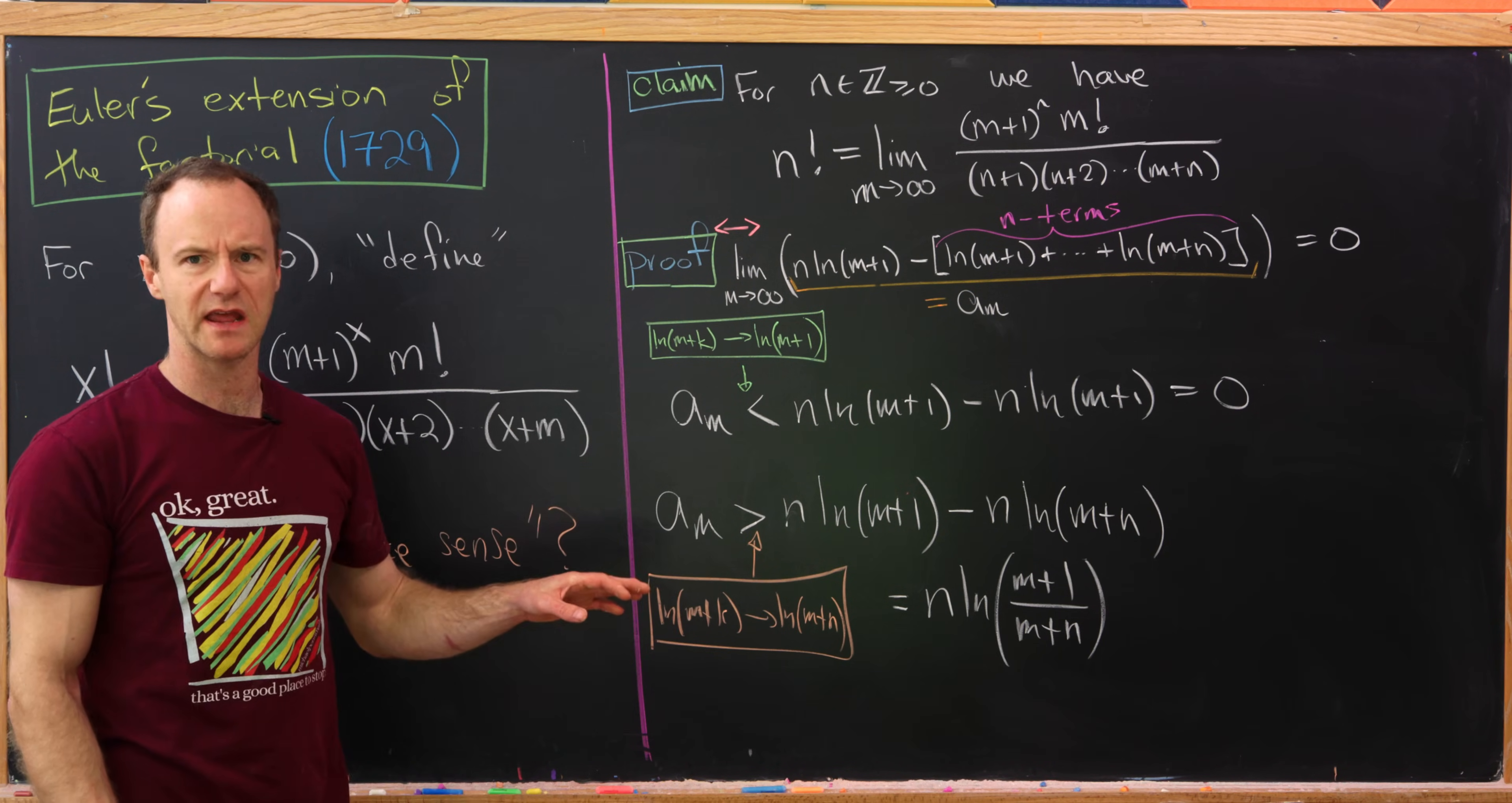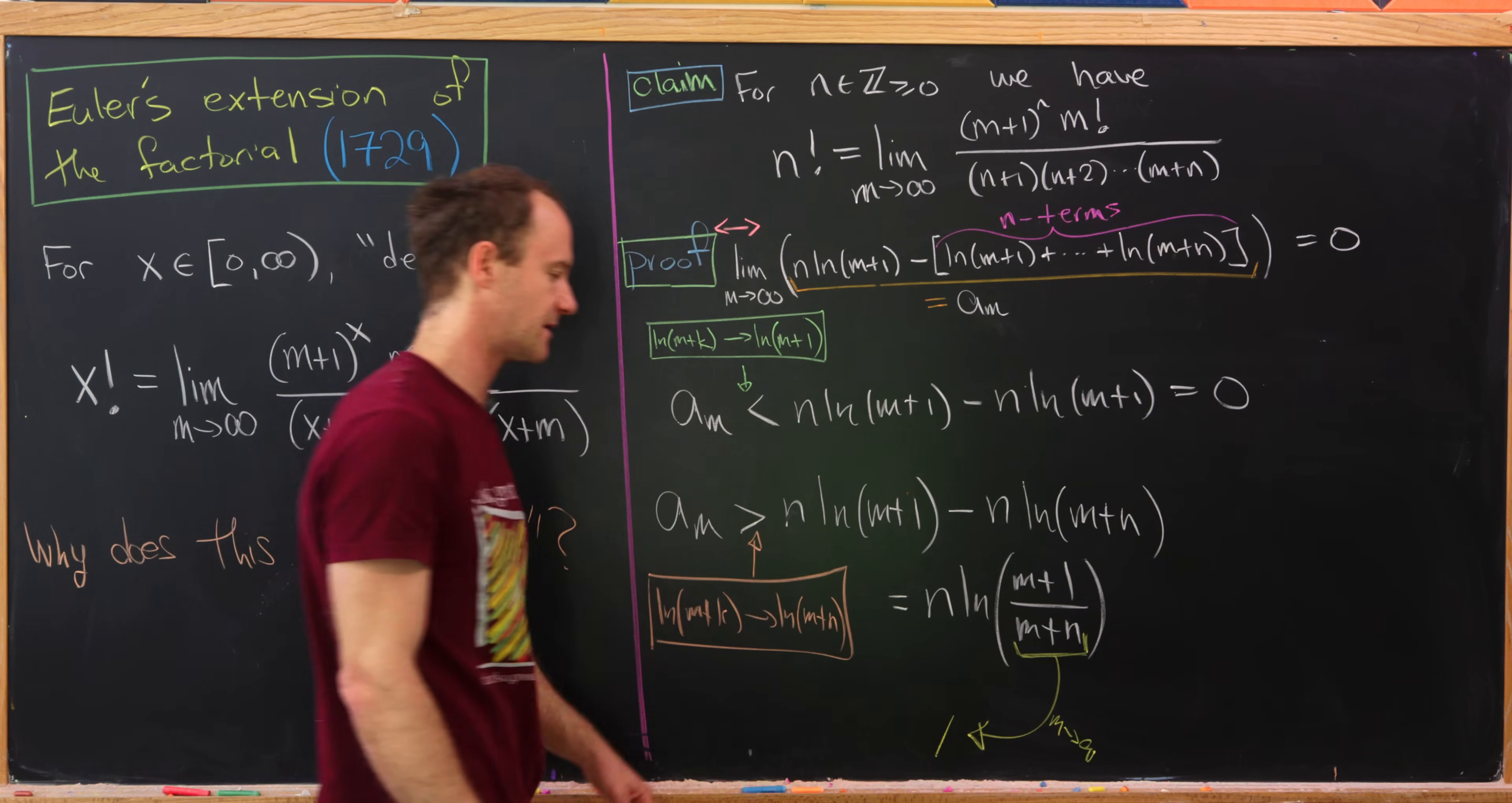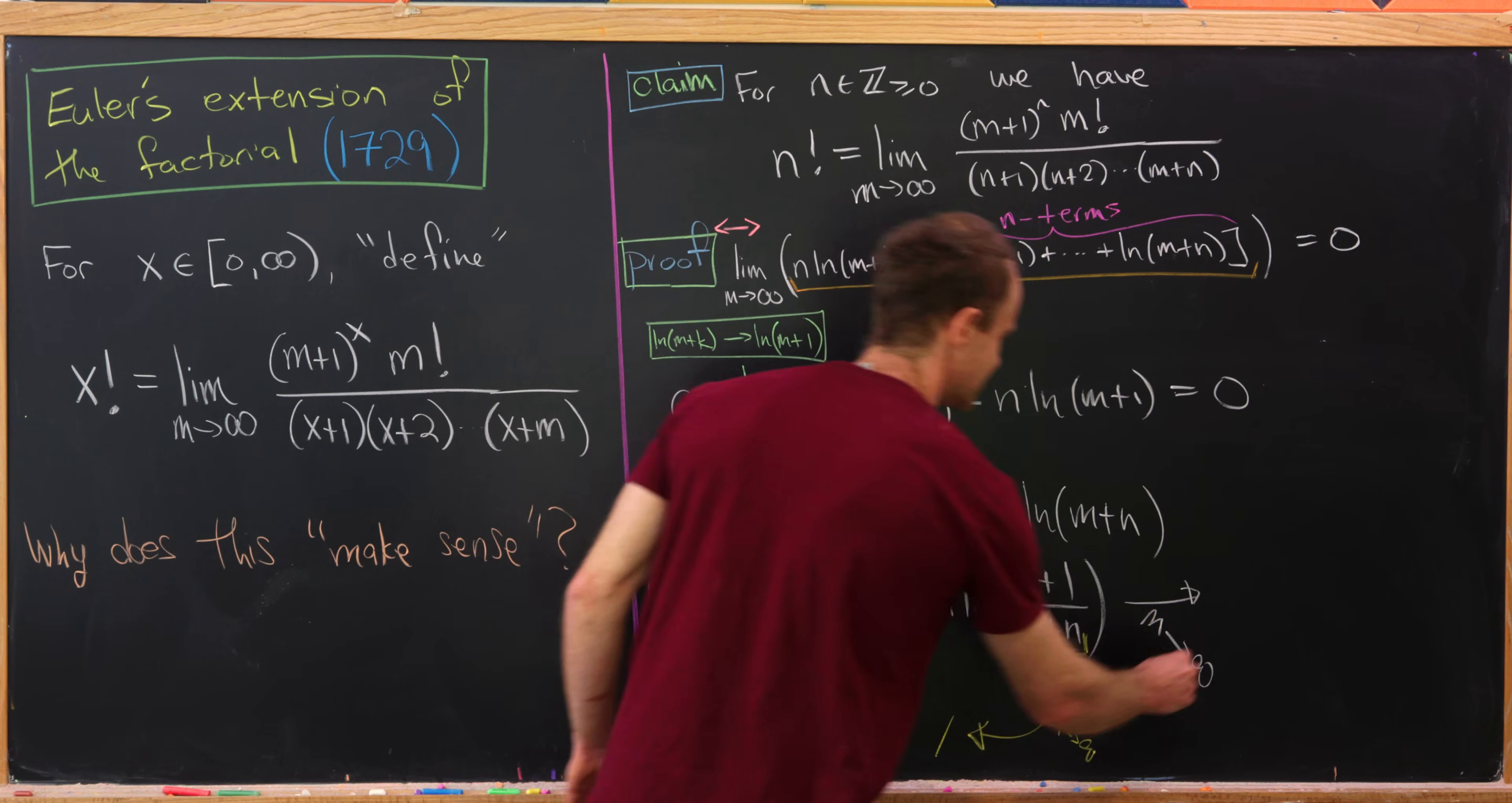And now let's recall that n is fixed. It's a constant with respect to our limit. What we're really doing is taking the limit as m approaches infinity. But let's notice that this rational expression right here approaches the number one as m approaches infinity. But that means since natural log is a continuous function, this whole thing approaches ln(1), or maybe really n times ln(1) as m approaches infinity. But again, ln(1) is zero.